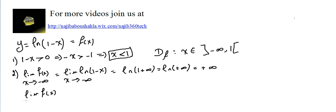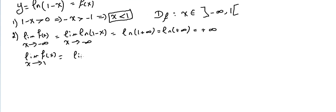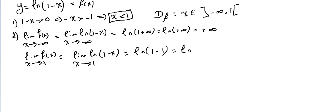Limit of f(x) as x approaches 1 equals the limit of ln(1 - x) as x approaches 1 from the left. Since x cannot equal 1 and approaches from minus infinity up to 1 open, we use 1⁻, giving ln(0⁺) = minus infinity. Therefore, x = 1 is a vertical asymptote.